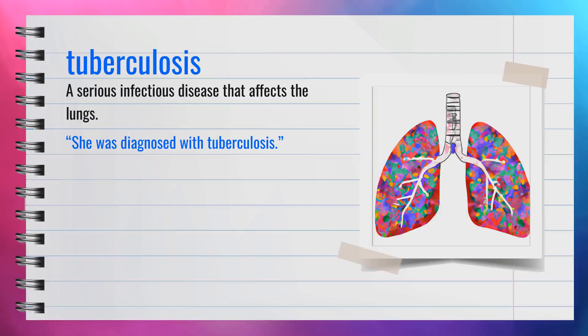The word tuberculosis, spelled T-U-B-E-R-C-U-L-O-S-I-S, is a noun. Synonyms include TB and consumption. For example, she was diagnosed with tuberculosis. Tuberculosis is a serious infectious disease that affects the lungs.